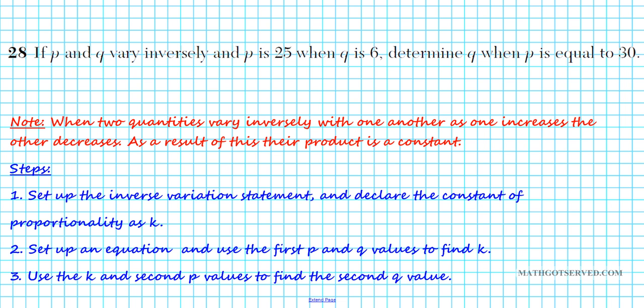One thing you want to note is that when two quantities vary inversely, that basically means that as one quantity increases, the second one decreases. As a result of this, their product will always be constant.